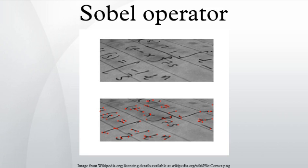The x coordinate is defined here as increasing in the right direction, and the y coordinate is defined as increasing in the down direction. At each point in the image, the resulting gradient approximations can be combined to give the gradient magnitude.